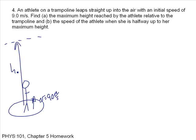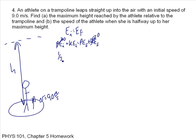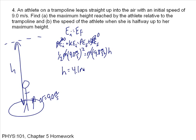I want to know the height h that he reaches before coming to a stop. Setting initial energy equal to final energy: PE-initial plus KE-initial equals PE-final plus KE-final. At the bottom, potential energy is zero; at the top, kinetic energy is zero. So one-half m times (9.0 m/s)² equals m times 9.8 m/s² times h. The m's cancel, and solving gives h equal to 4.1 meters — the same answer as the previous problem. Instead of dropping something, we have something jumping up from the ground, but it works the same way.